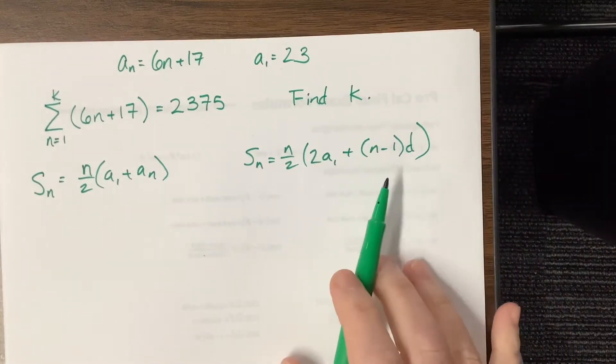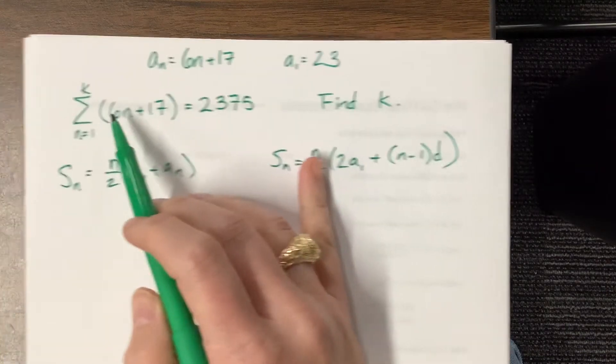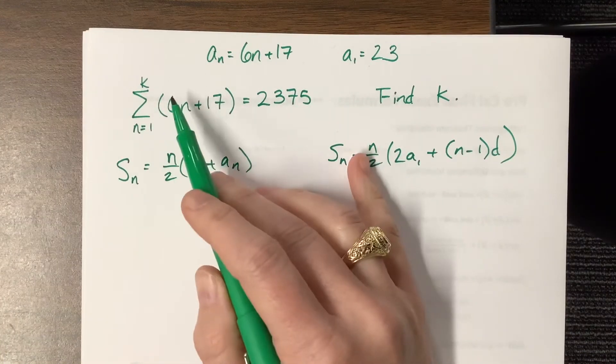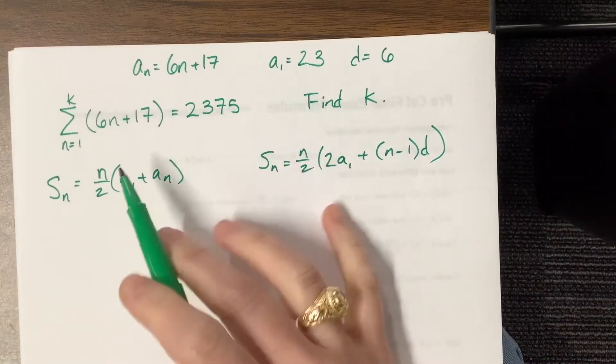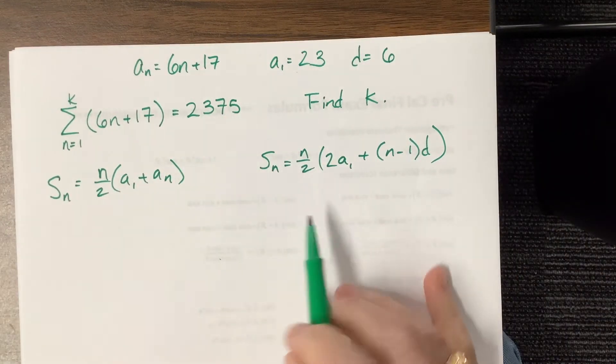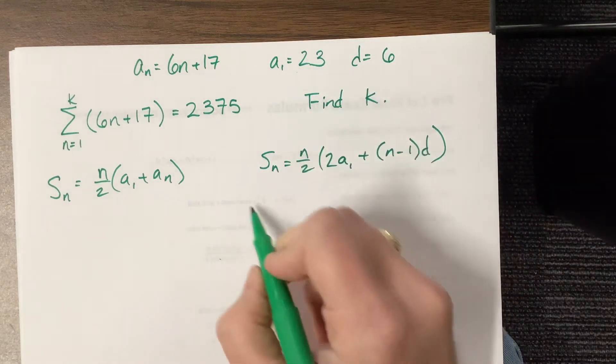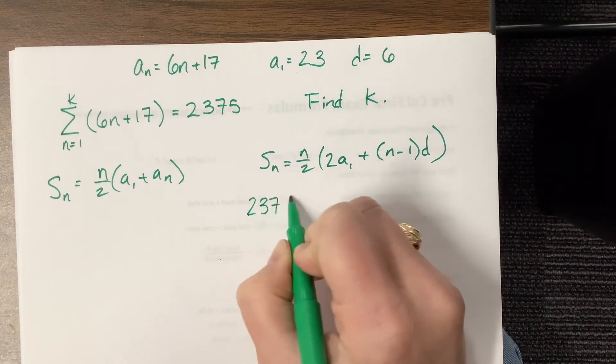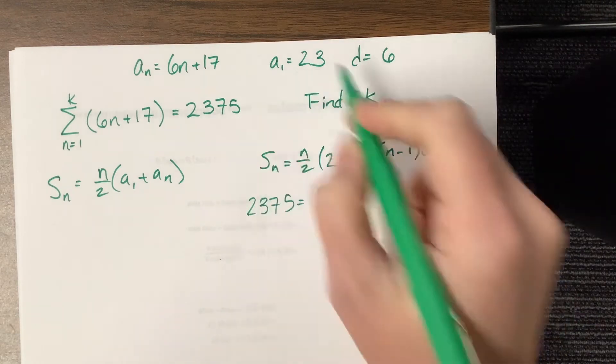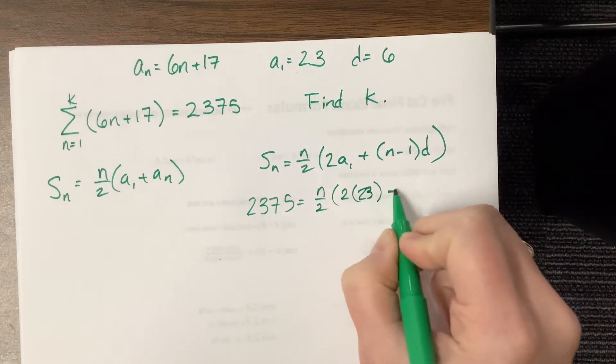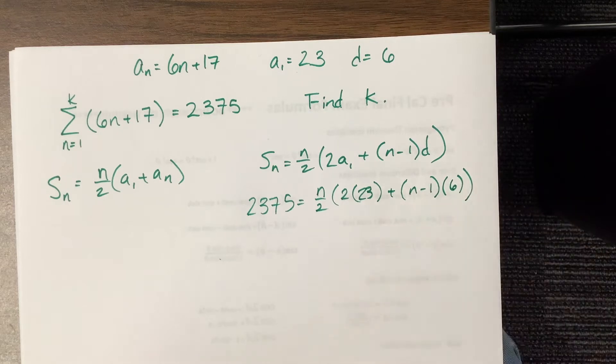So I'm going to want to use this version of the equation, because I also know that this number, this 6 right here, is my common difference. So since I know the common difference is 6, and I know the first term, and I know the sum of n terms, I can plug into this equation and try and solve for n. So I have 2375 is equal to n over 2 times 2, I said a sub 1 was 23, plus n minus 1 times my common difference was 6, and I can close the parentheses.